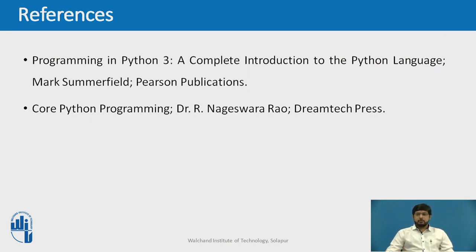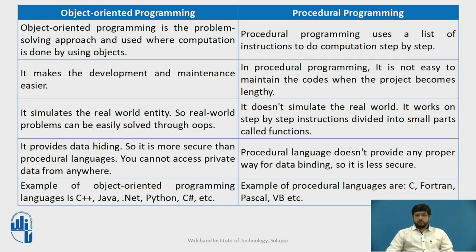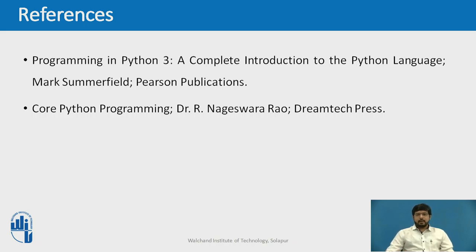The key points of this video are: object-oriented programming makes programs easy to understand and efficient; since classes are shareable, code can be reused; data is safe and secure with data abstraction; and polymorphism allows the same interface for different objects, enabling efficient coding. References used to create this video include Programming in Python 3 by PSN Publications and Core Python Programming by DreamTech Press. Thank you.